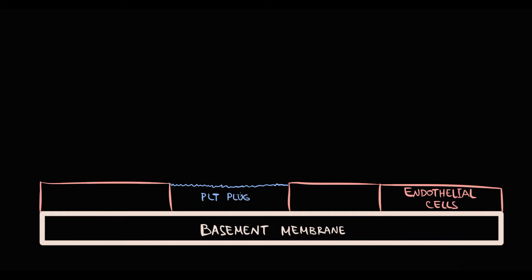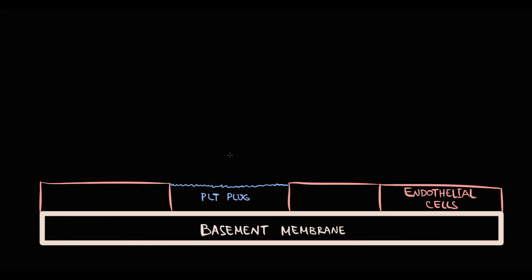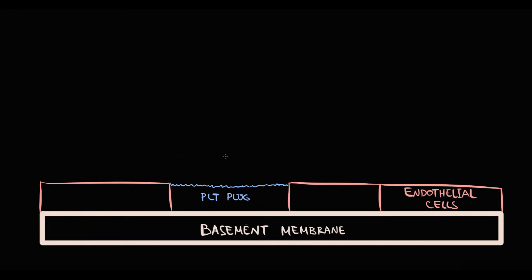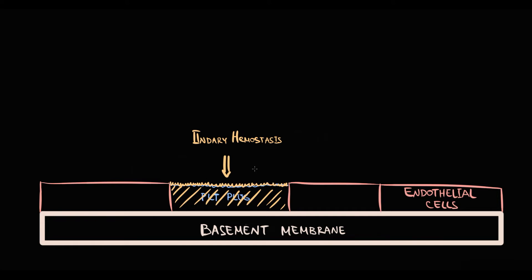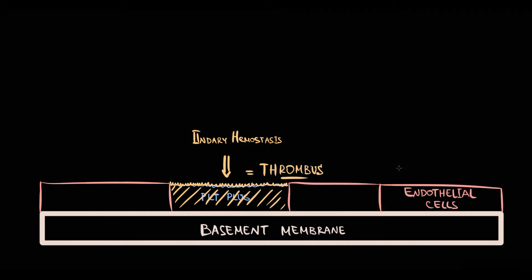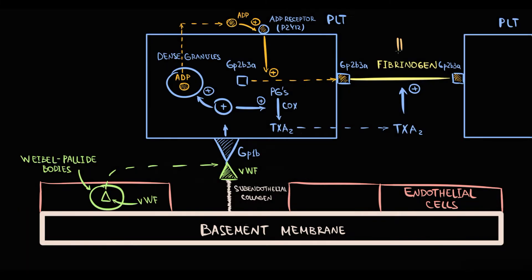But the platelet plaque is weak, and to stabilize it and make it formidable, we have secondary hemostasis. The function of secondary hemostasis is to make from a weak platelet plaque a formidable structure called a thrombus. The thing that makes this platelet plaque formidable is conversion of unstable fibrinogen into stable fibrin.